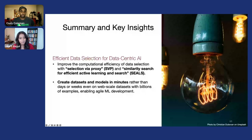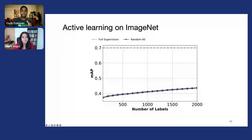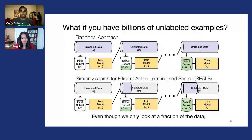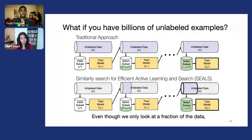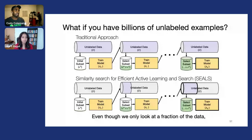In the similarity search, we take that labeled set we have after each round and find the nearest neighbors of those labeled data points in the unlabeled data. To keep the computation of the similarity search manageable, we use an approximate K-nearest neighbors algorithm, which can scale to billions of examples with sub-second latency.